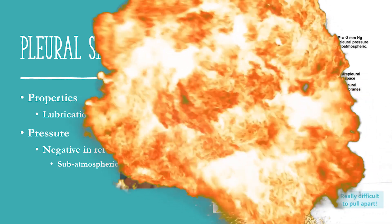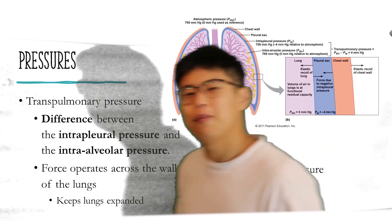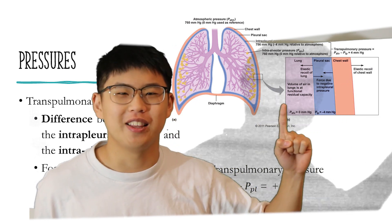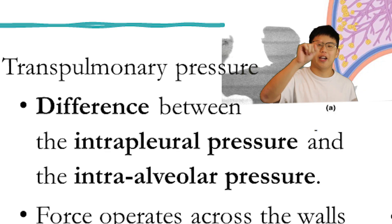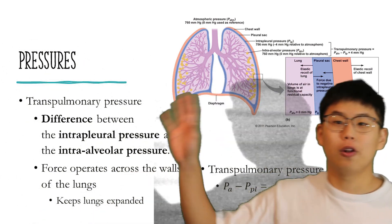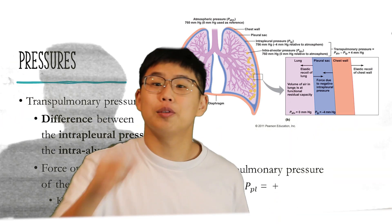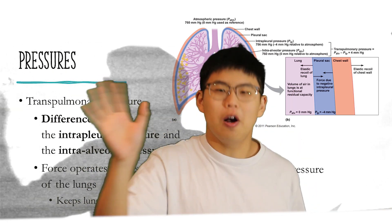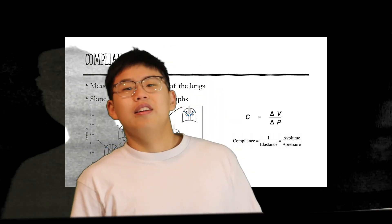A real-life analogy is two plates of glass with a water layer between them — they're easy to slide back and forth but extremely difficult to pull apart. The force in this pleural space resisting the pulling apart creates a negative pressure relative to the atmosphere. The pressure gradient from inside the lungs to the pleural cavity is called the transpulmonary pressure. Pressure in the lungs is called alveolar pressure (PA); pressure in the pleural space is called Ppl. Since pleural pressure is negative and alveolar pressure is positive, the difference between the two is always positive, meaning the force of pressure always acts to expand the lungs.